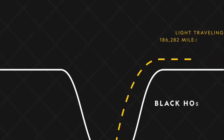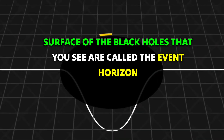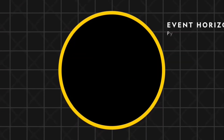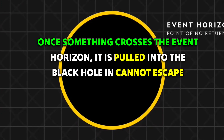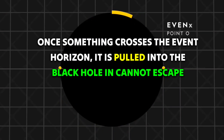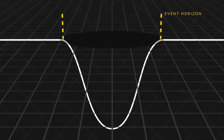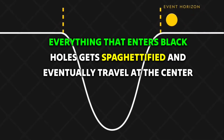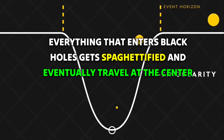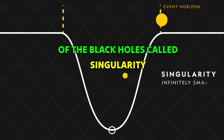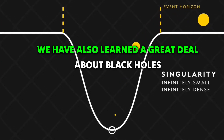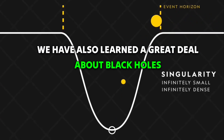The disk surface of the black holes that you see is called the event horizon. Once something crosses the event horizon, it is pulled into the black hole and cannot escape. Everything that enters black holes gets spaghettified and eventually travels to the center of the black hole, called the singularity.